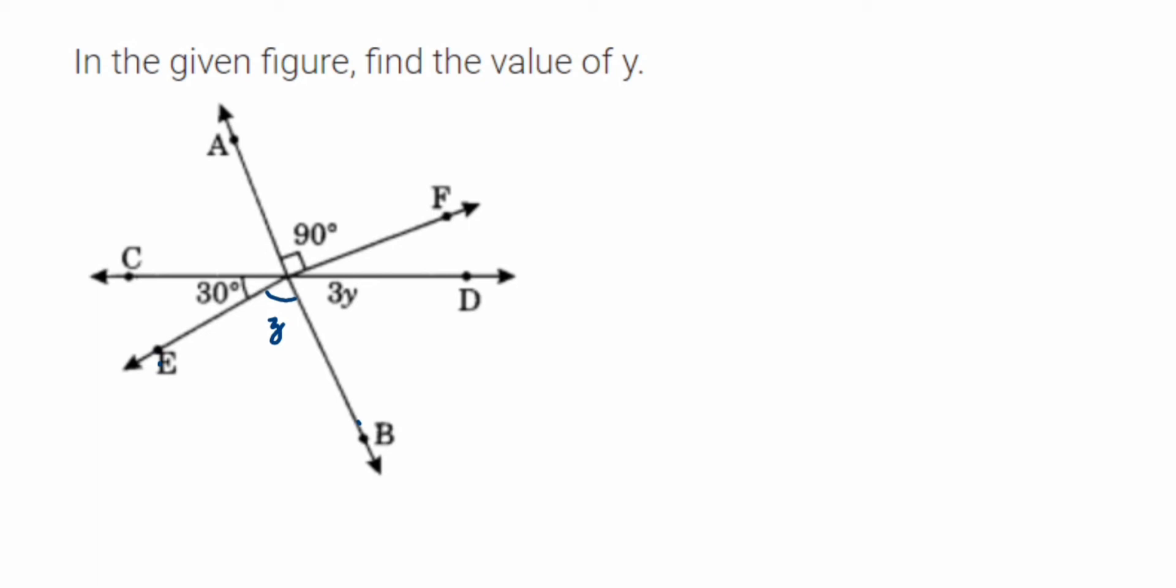Since all the lines are intersecting at point O, angle AOF is equal to angle EOB. They are vertically opposite angles - V.O.A. means vertically opposite angle.